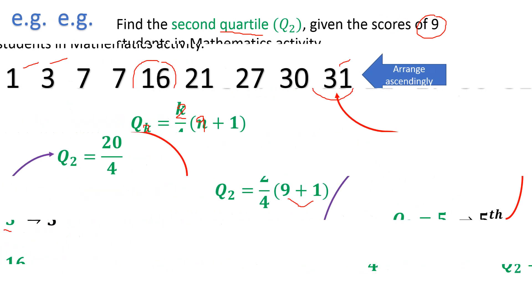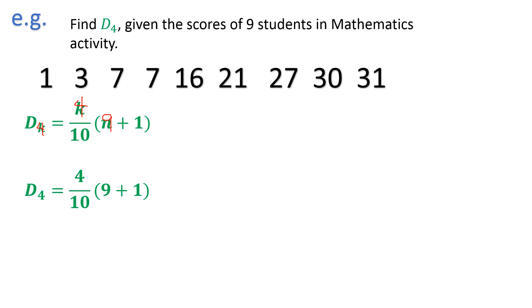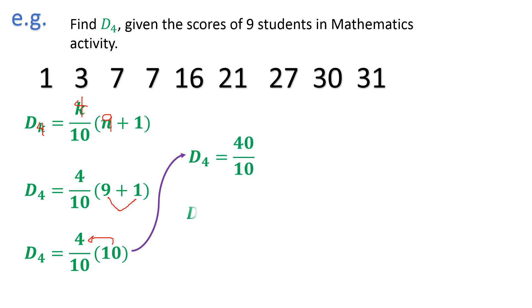Let's find decile 4, given the same set of scores, already arranged ascendingly. Using the decile formula: decile class equals k over 10 times n plus 1. For decile 4, k is 4 and n remains 9. So D4 equals 4 over 10 times (9 plus 1). That gives 40 over 10, and 40 divided by 10 gives 4. So 4 is the position — the fourth value in our data is 7. Therefore, decile 4 is 7.